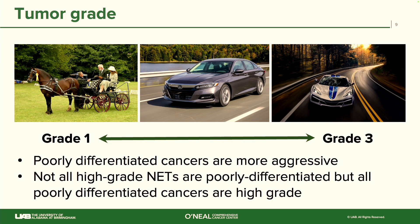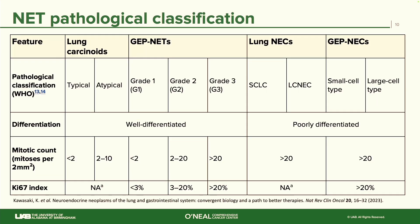Here's an analogy to understand the different grades. Think of grade one as a horse cart — slow growing, slow moving. In the middle you have grade two, not as fast as a corvette but also not as slow as a horse cart. Poorly differentiated cancers are more aggressive. A higher grade tumor is more aggressive than a lower grade tumor. One key thing: not all high-grade NETs are poorly differentiated, but all poorly differentiated cancers are high grade.